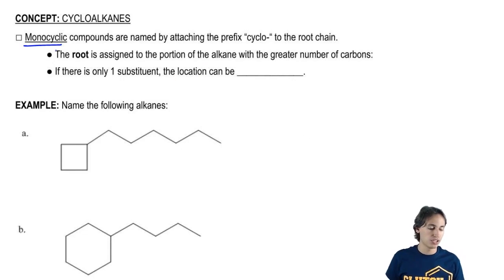All we're going to do is just attach cyclo to the beginning of the root chain. So all of a sudden, hexane becomes cyclohexane if it's a ring.